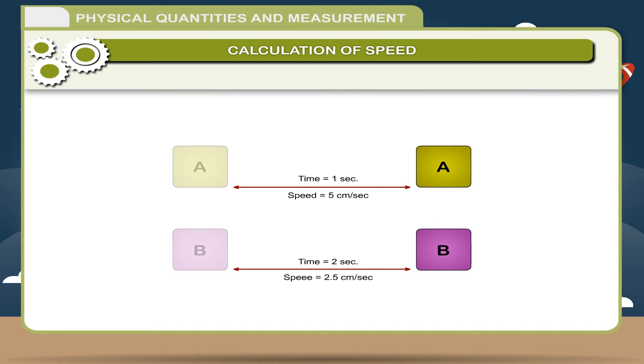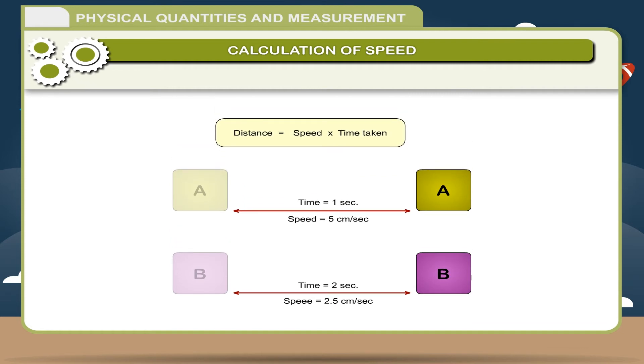If the speed of an object and the time is known, then distance traveled can be calculated by the formula: distance = speed × time taken.